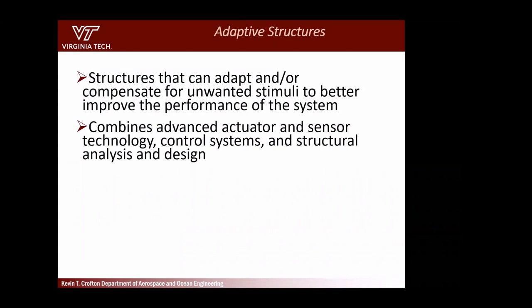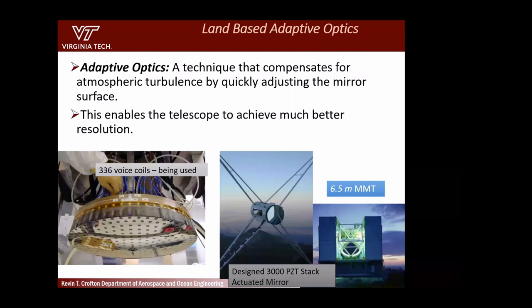When you take smart materials and put them into a structure, that structure becomes intelligent — we call those adaptive structures. One example is adaptive optics. Land-based telescopes looking through the atmosphere have images distorted by atmospheric turbulence. By placing actuators on the mirror, you can adjust and change its shape. One system has 3,000 PZT actuators that control the shape of the mirror.